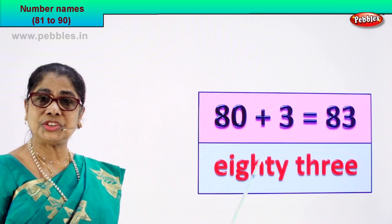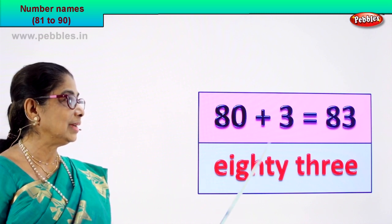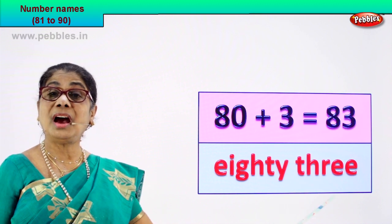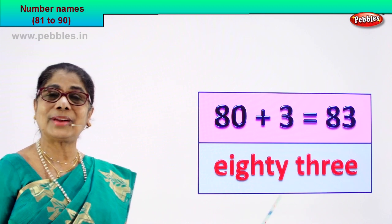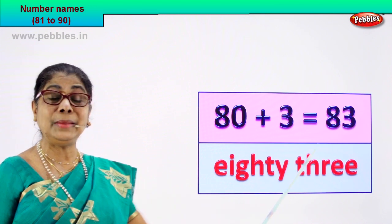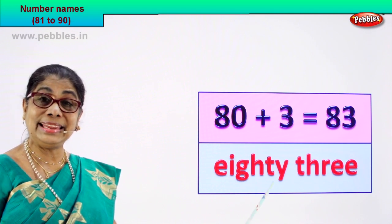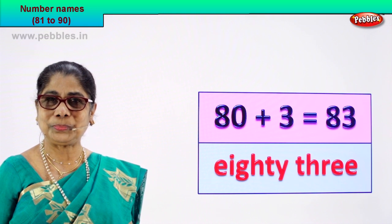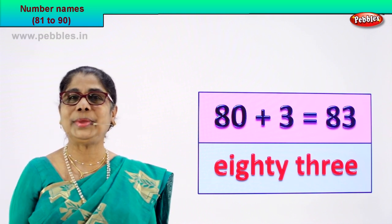80 — E-I-G-H-T-Y — and 3 — T-H-R-E-E. So 83: you write the numeral 8 and 3, and the name as eighty-three. Good! Shall we go to our next number?